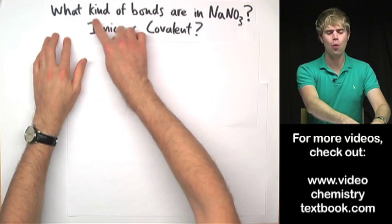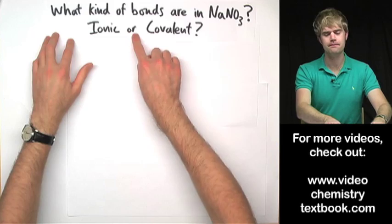What kinds of bonds are in NaNO3, ionic or covalent? Think about this for a second.